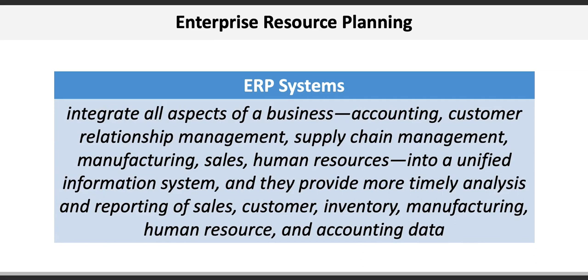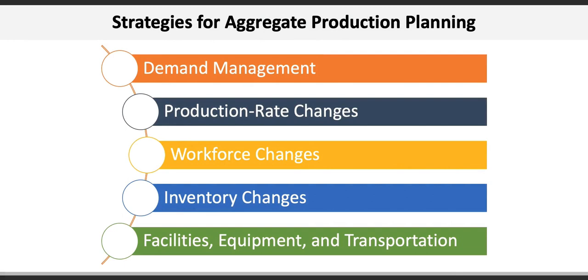Managers have a variety of options in developing aggregate plans in the face of fluctuating demand. They include demand management, production rate changes, workforce changes, inventory smoothing, and adjustments to facilities, equipment, and transportation. Each of these involves a unique set of decisions that have revenue and cost implications.